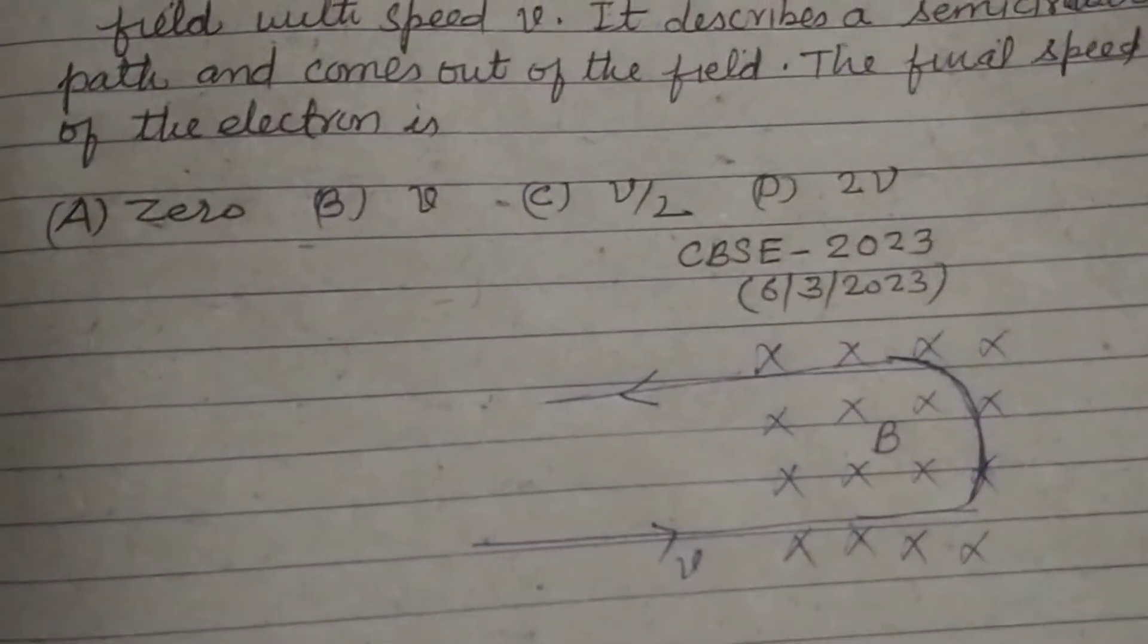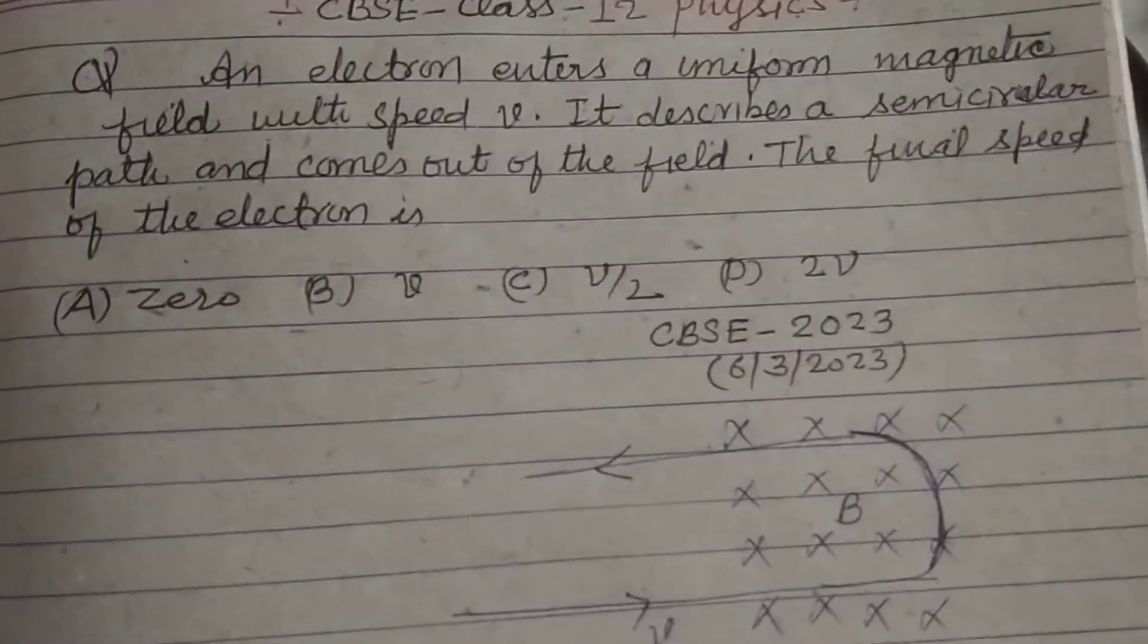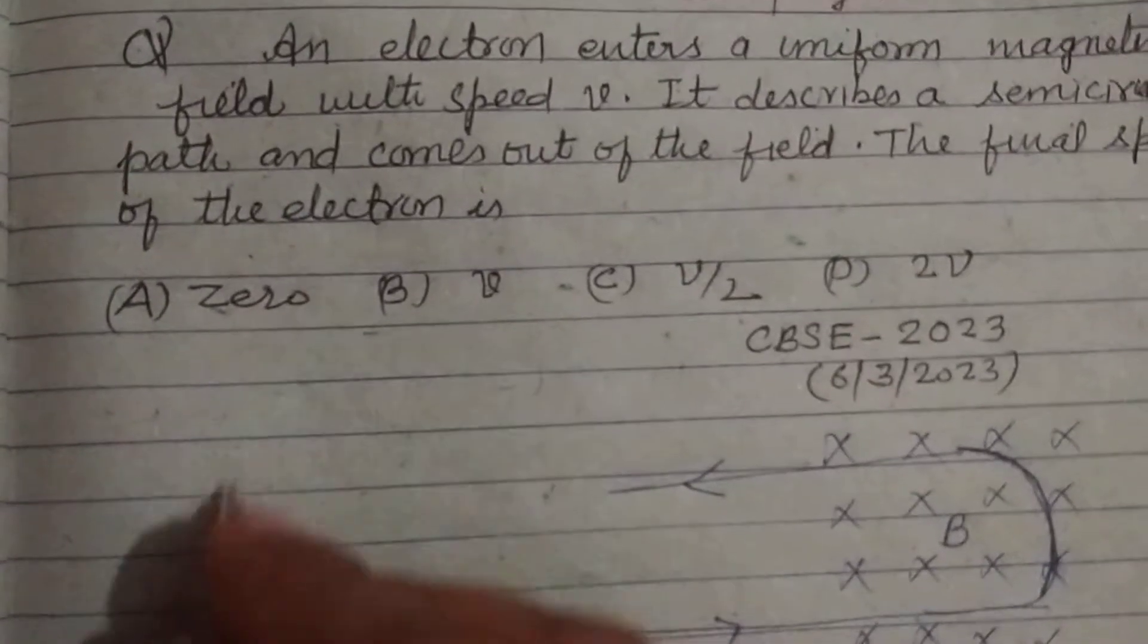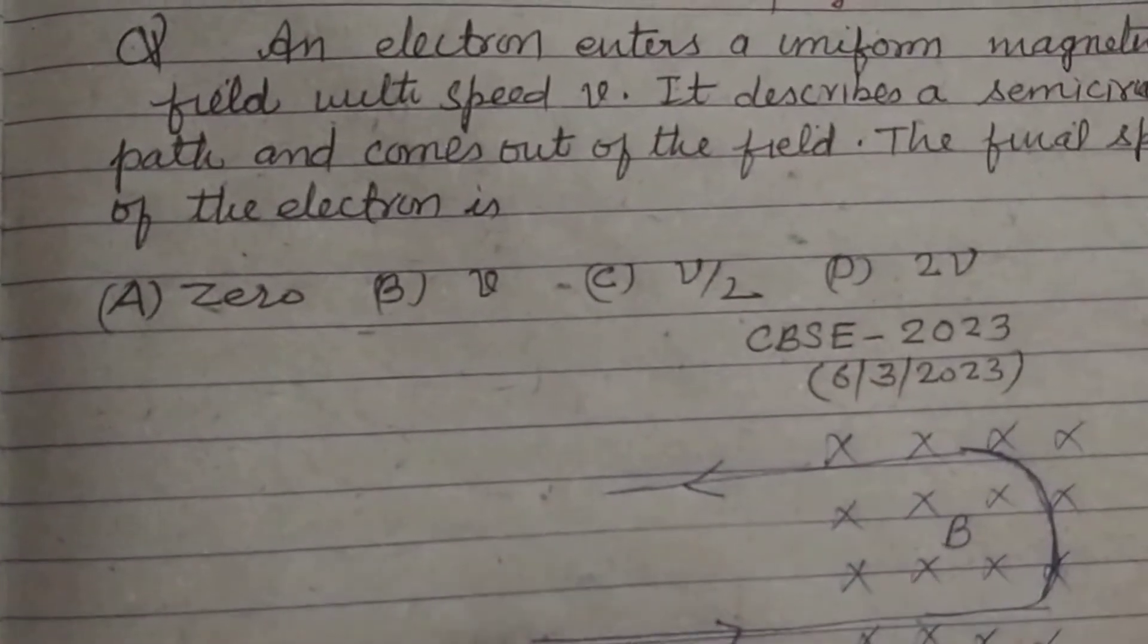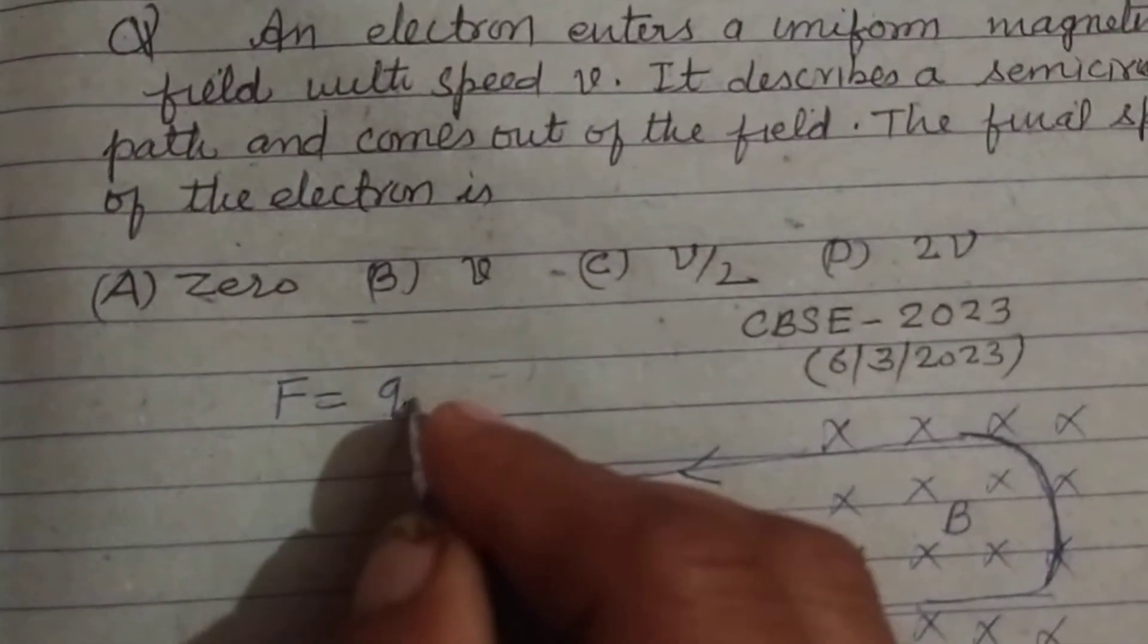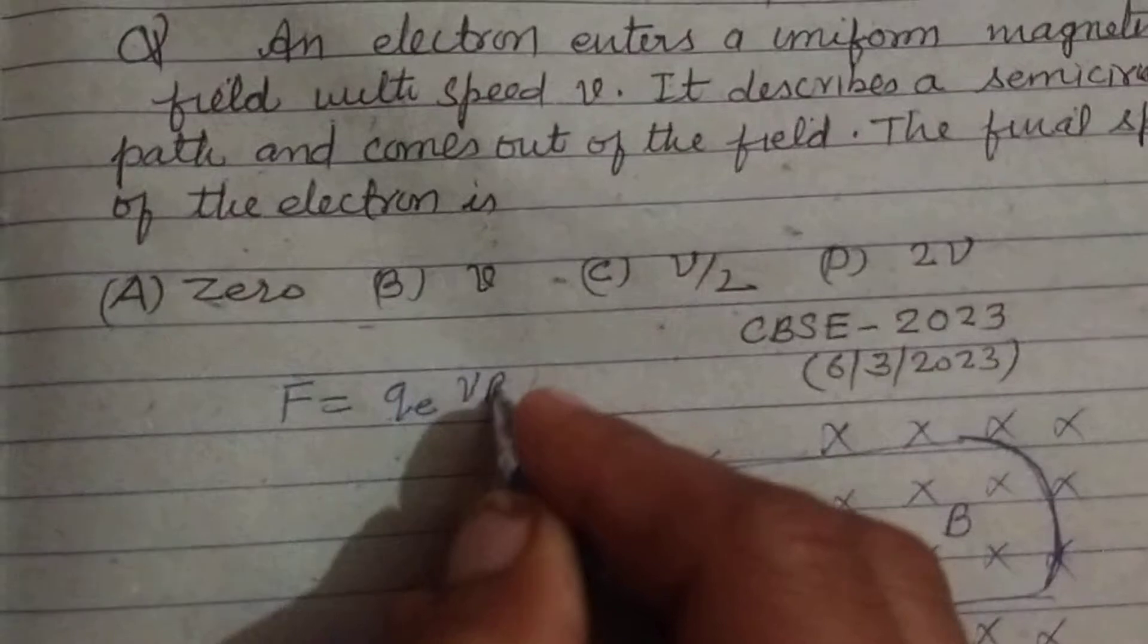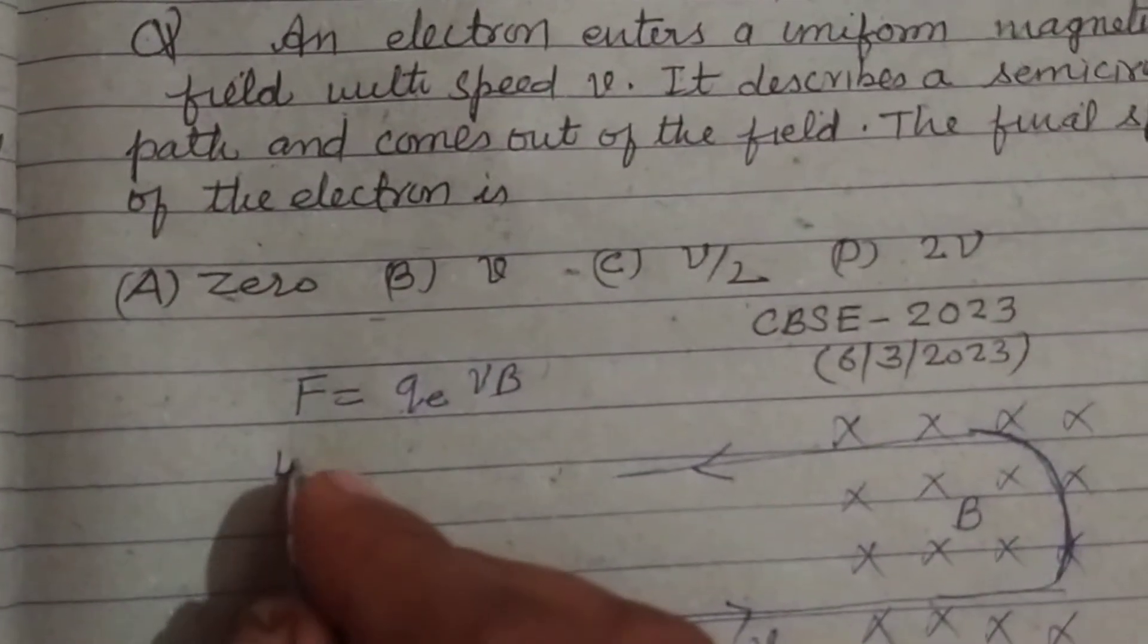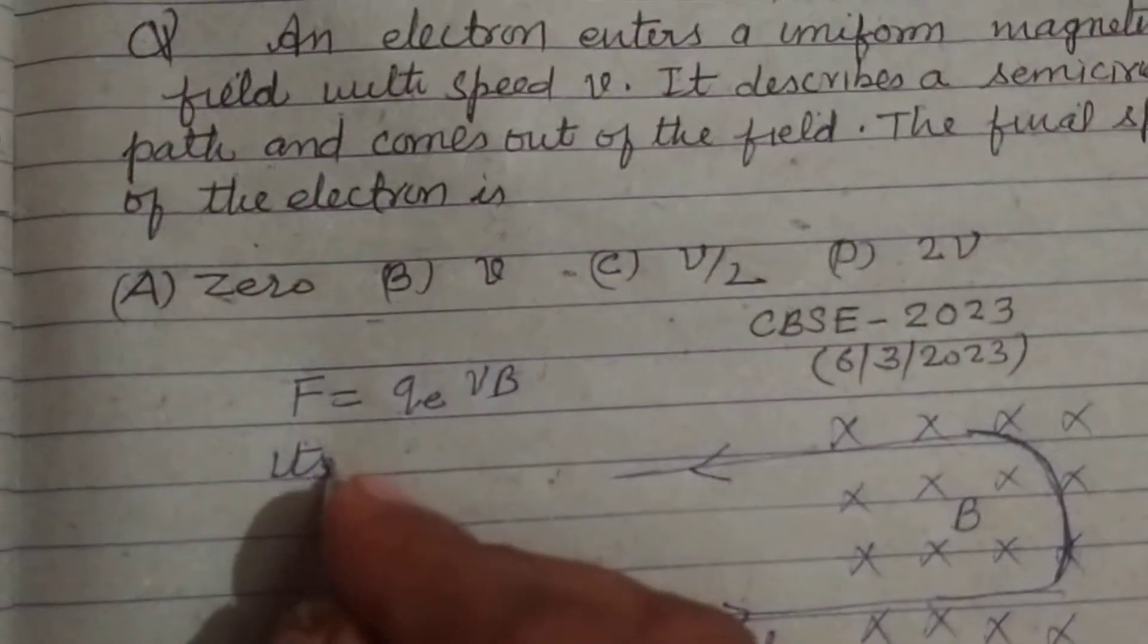So students, when an electron moves with velocity v in a magnetic field, it experiences a force F = qevB. Since it moves on a circular path...